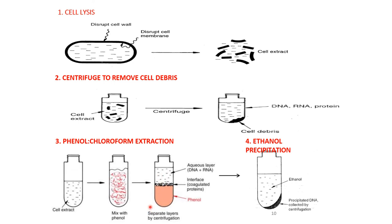The supernatant is taken and phenol plus chloroform is added. Chloroform helps in partitioning the organic and biomolecules, while phenol denatures the protein. This creates three layers: phenol at the bottom, a middle layer of coagulated protein, and the top supernatant containing DNA and RNA. We can also add protease enzymes so that degradation of the protein takes place.